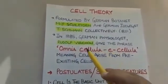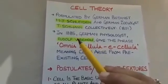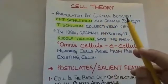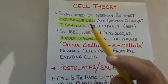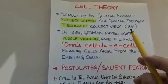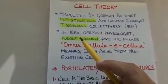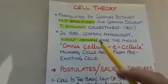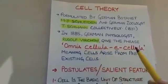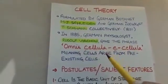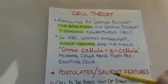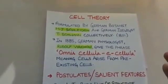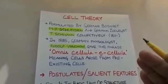The next topic is cell theory. Cell theory was collectively formulated by two German scientists: German botanist M.J. Schleiden and German zoologist T. Schwann. They formulated this theory in the year 1839. After a few years, in the year 1855, German physiologist Rudolf Virchow gave the phrase omnis cellula e-cellula, which means cells arise from pre-existing cells. It means that when a living cell divides, it will give rise to new cells — all new cells are made from a cell that is already existing in nature.